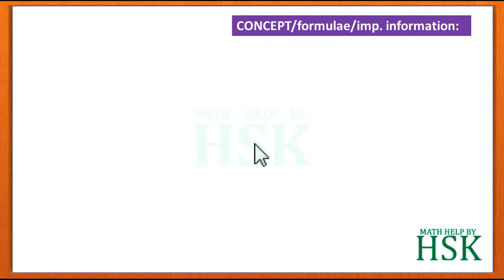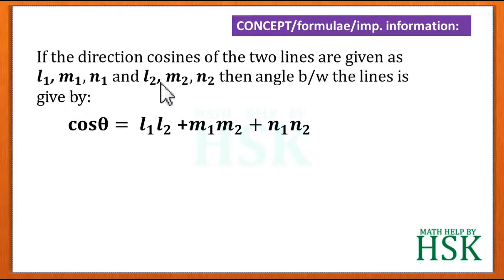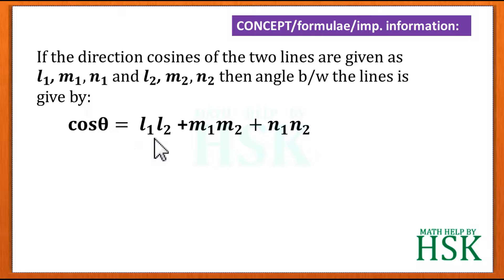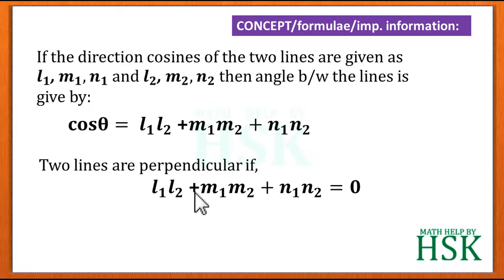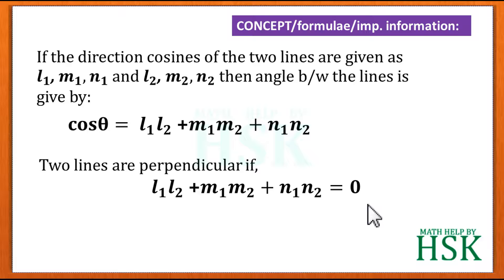To solve this question we should know the following concept: consider two lines with direction cosines l1, m1, n1 and l2, m2, n2. Then the angle between them is given by cos θ = l1·l2 + m1·m2 + n1·n2. If the lines are perpendicular, this product equals zero because cos 90° = 0. So if two lines are mutually perpendicular, then l1·l2 + m1·m2 + n1·n2 = 0.